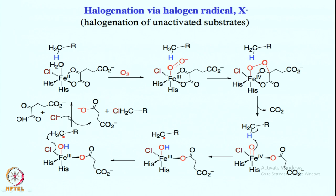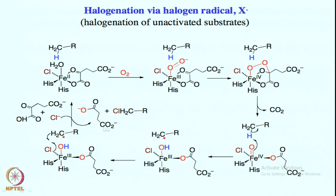Chlorine gets transferred to this carbon radical to give the halogenated product without formation of any hydroxylation product. Another chloride comes in and regenerates the catalytic cycle; the diacid goes out and the alpha-ketoglutarate also comes in to complete the catalytic cycle — the byproduct is succinic acid. Overall, a non-heme iron center supported by alpha-ketoglutarate and a halide, appended with 2 histidine and a water molecule, undergoes intramolecular reaction to form a high-valent oxo-halide intermediate which selectively promotes hydrogen atom abstraction and chloride rebound to give a halogenated product.